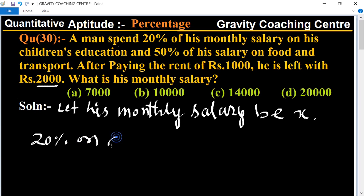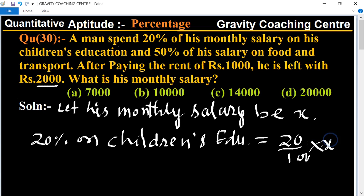Children's education. So 20% means 20 upon 100 times X. So 20 table of 2, 1, 5, equal to X upon 5.